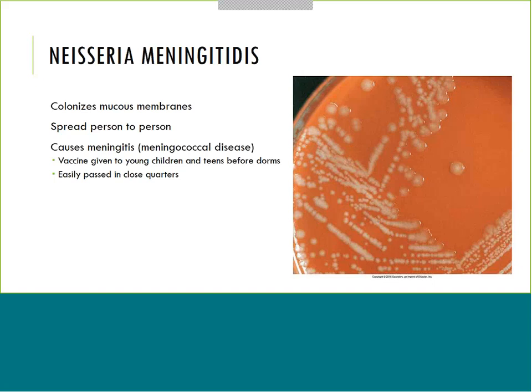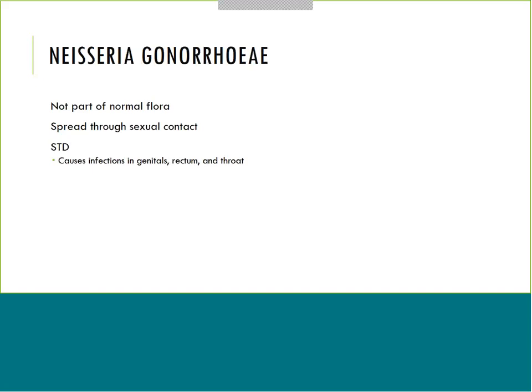Neisseria meningitidis is the organism typically to blame in those cases - that is its prime target population. We talked about Strep pneumoniae as a major cause of meningitis targeting a different group, and GBS and Listeria target more fetuses. Neisseria meningitidis typically targets children and teenagers, especially those living in close quarters. There is a vaccine highly recommended for everyone. Neisseria meningitidis colonizes mucous membranes and is spread person to person through respiratory transmission.